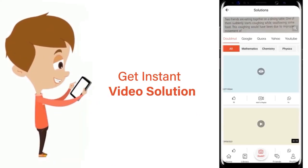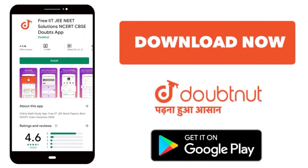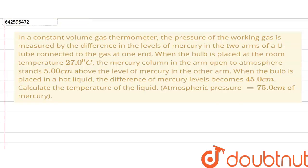In this question, in a constant volume gas thermometer, the pressure of the working gas is measured by the difference in the levels of mercury in the two arms of a U-tube connected to the gas at one end. When the bulb is placed at room temperature, which is at 27 degrees Celsius, the mercury column in the arm open to atmosphere stands five centimeters above the level of mercury in the other arm.